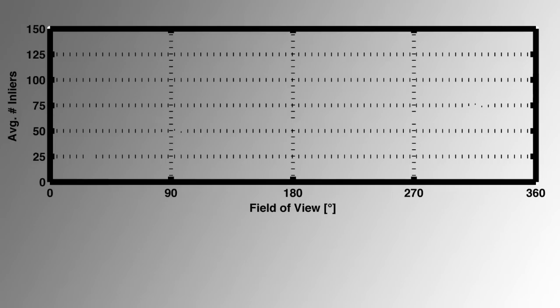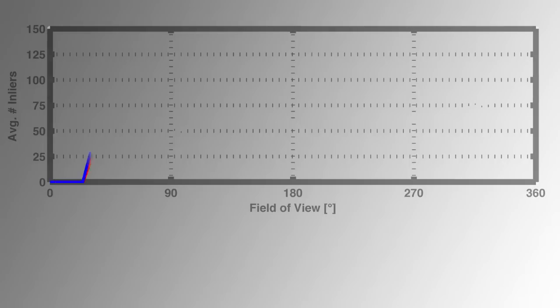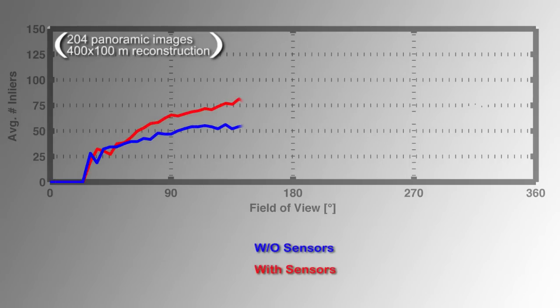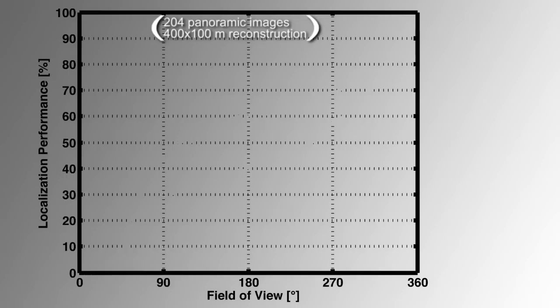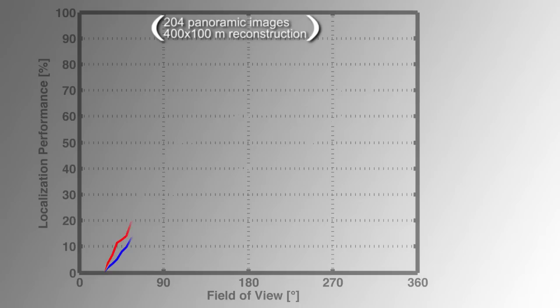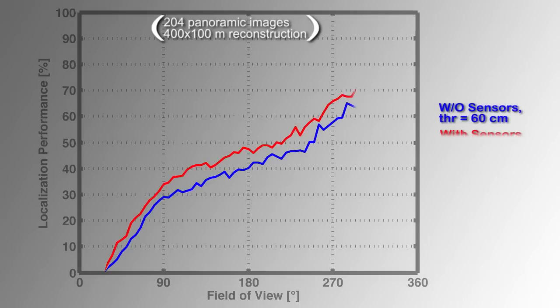We evaluated our approach against an approach that does not consider sensor information. The usage of sensors increases robustness in terms of the number of inliers. On average, the number of inliers can be increased by about 50%.